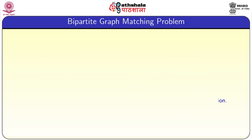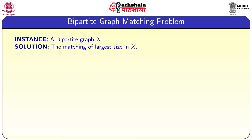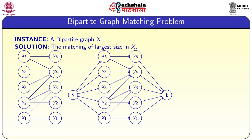The first application is bipartite matching. The bipartite graph matching problem is defined as follows: the instance is a bipartite graph X and the solution we need is a matching of largest size in X. We convert the given bipartite graph into a network by adding two vertices s and t, with edges from s to all vertices x1, x2, ..., x5 and edges from y1, y2, ..., y5 to t. We also convert all undirected edges between the two sides into directed edges from xi to yi. The in-degree and out-degree of each vertex in the xi group are maintained appropriately.